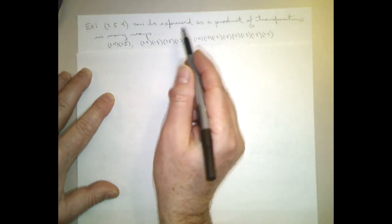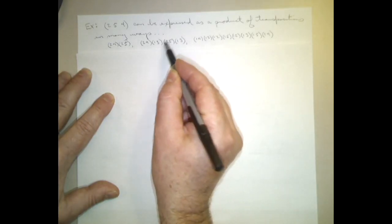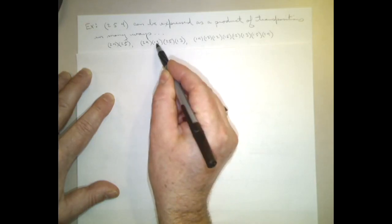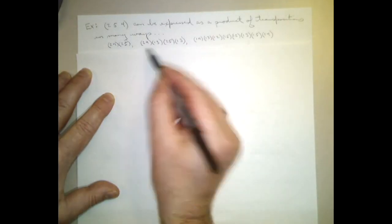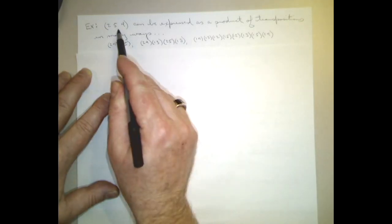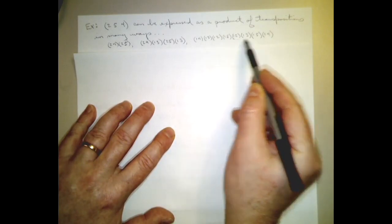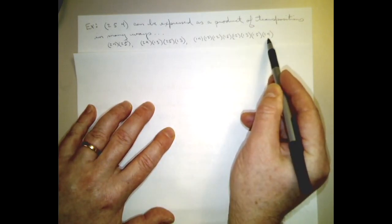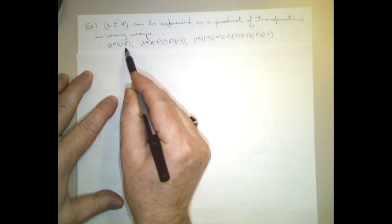Transpositions are their own inverses. So whenever I send 1 to 3 and then apply the same transposition, 3 gets sent back to 1 again - so 1 goes to itself. In fact, here are 8 transpositions which, whenever I compose them all together, do exactly the same thing that (2, 5, 4) does. So I've expressed (2, 5, 4) as a product of 2 transpositions, as a product of 4 transpositions, and as a product of 8 transpositions.